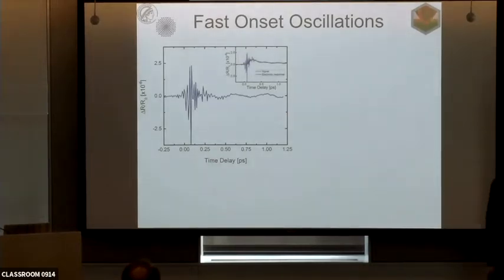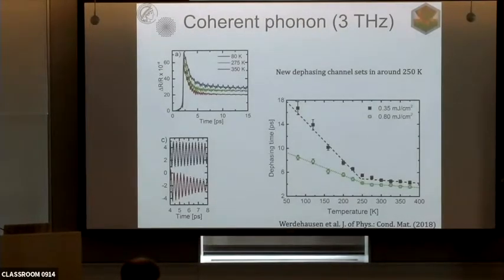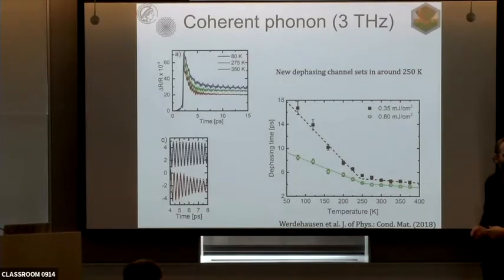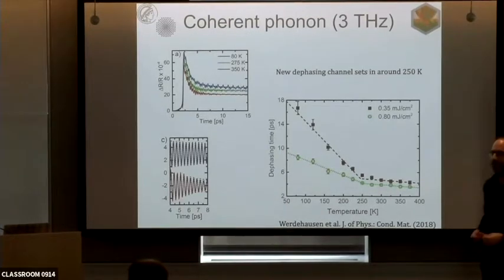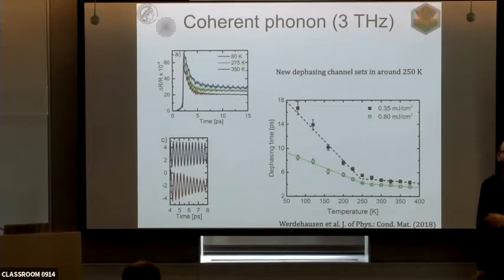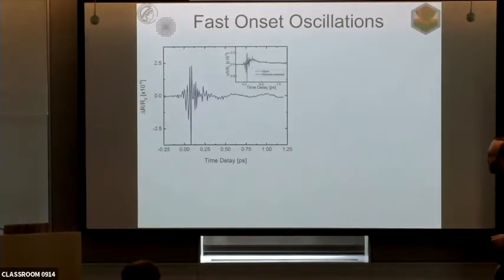The 250 K anomaly is not fully understood. We plan to measure pressure-tuned and chemically substituted samples to see if this feature shifts, and whether it is related to a BCS-BEC type crossover. If there is a BCS-type contribution setting in here, we could fit it by adding a small BCS contribution on top, but this is speculation until we measure at least three or four other samples.